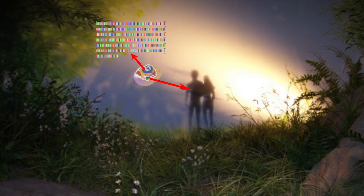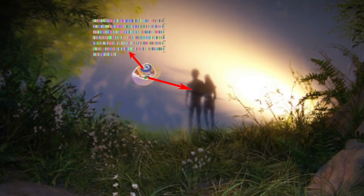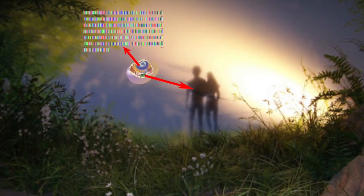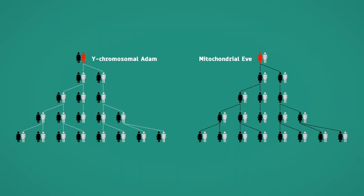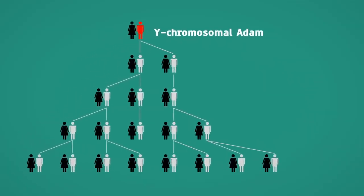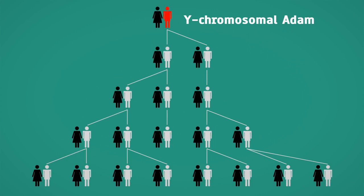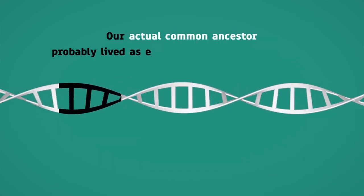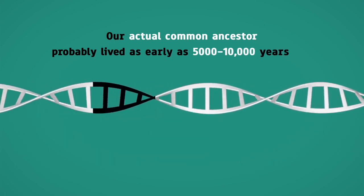As we have seen, one of the best lines of evidence for the first couple, Adam and Eve, is in our genetics. Both mitochondrial Eve and Y-chromosome Noah have been discovered by modern science. Our actual common ancestor probably lived as early as 5,000 to 10,000 years ago.